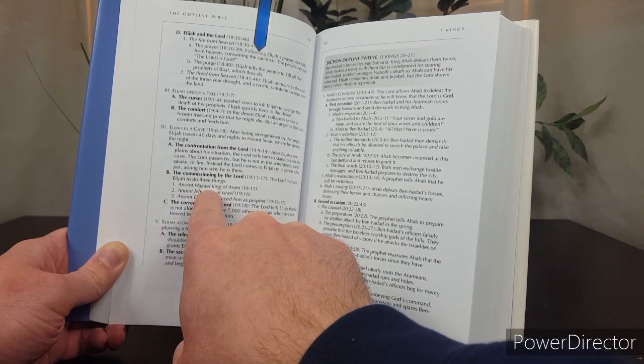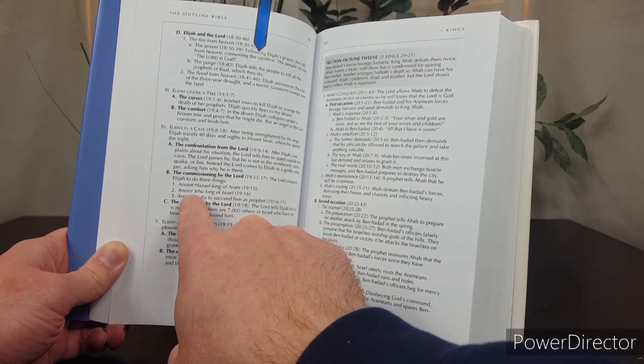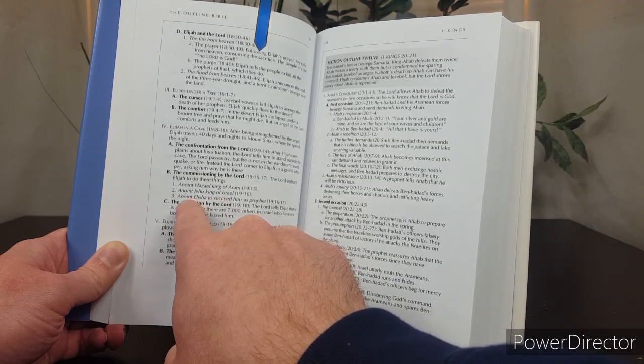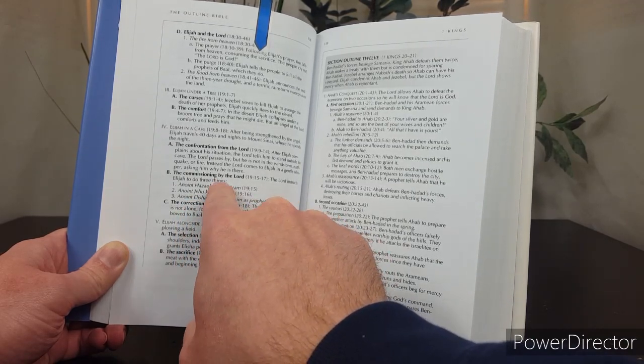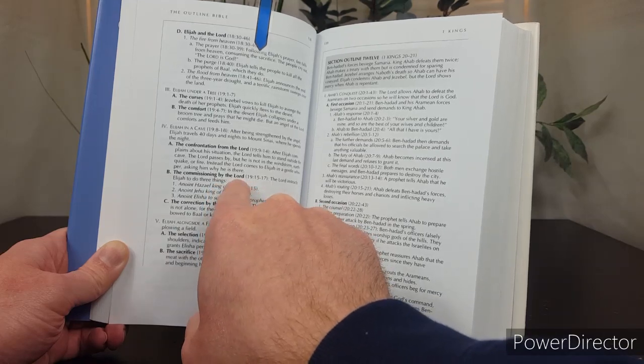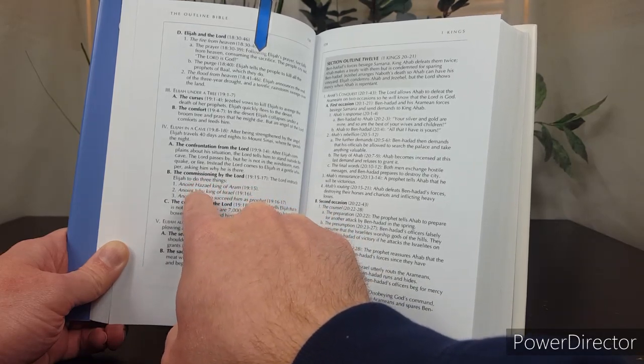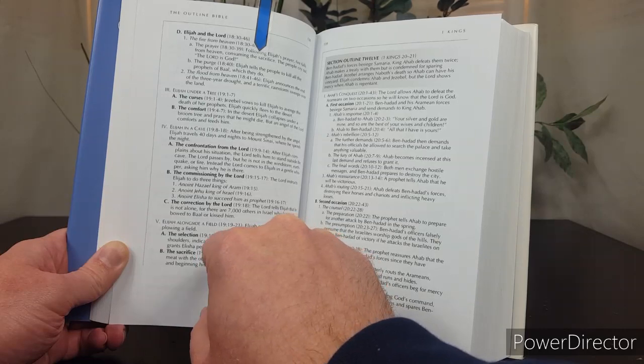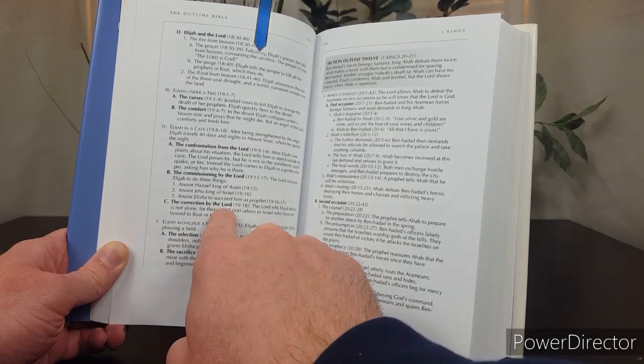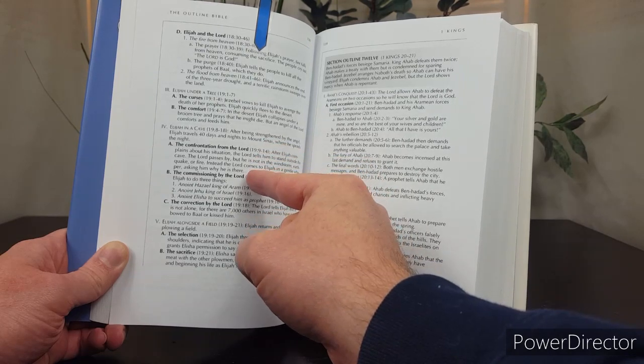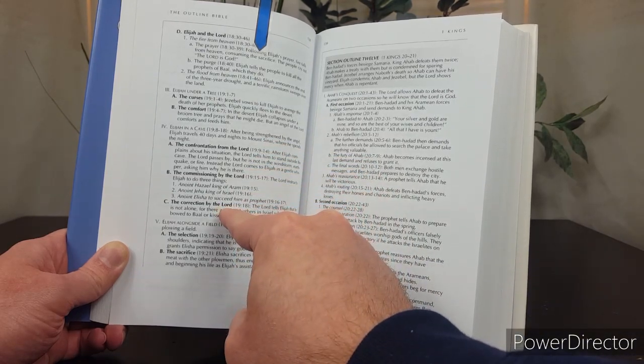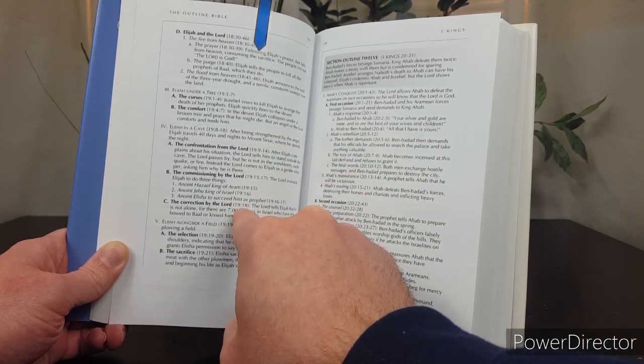Now, there are three sub-points under 15 through 17. Anoint Hazael, king of Aram. Anoint Jehu, king of Israel. Anoint Elijah to succeed him as prophet. So, even that, those verses have a sub-organization to them. And then C, the correction by the Lord. Note the alliteration again. The confrontation from the Lord, the commissioning by the Lord, the correction by the Lord. And that point C is just one verse, verse 18.